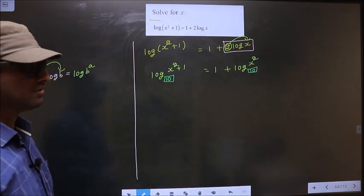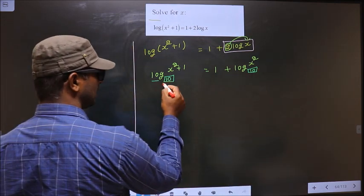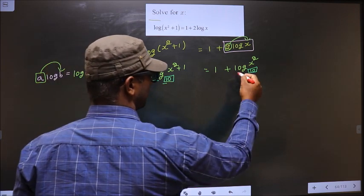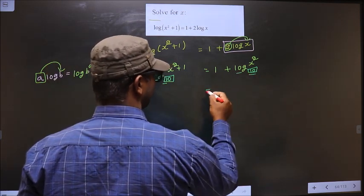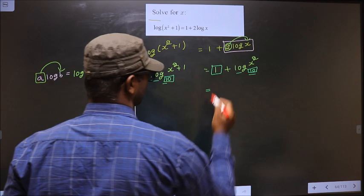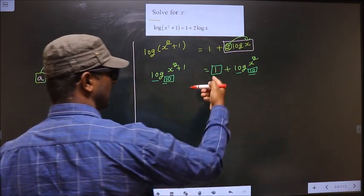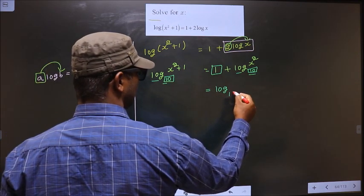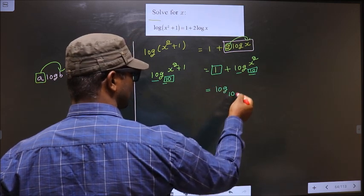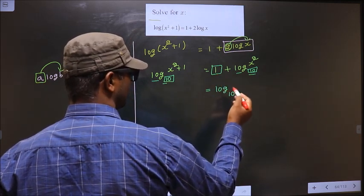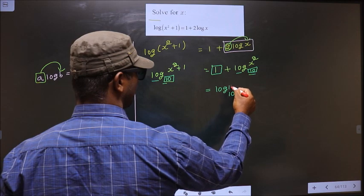Now here you have log with base 10, and here you have log with base 10. Here I don't have any log. I wish to get log here with base 10. This should become 1. For that to happen, I should put 10 here.